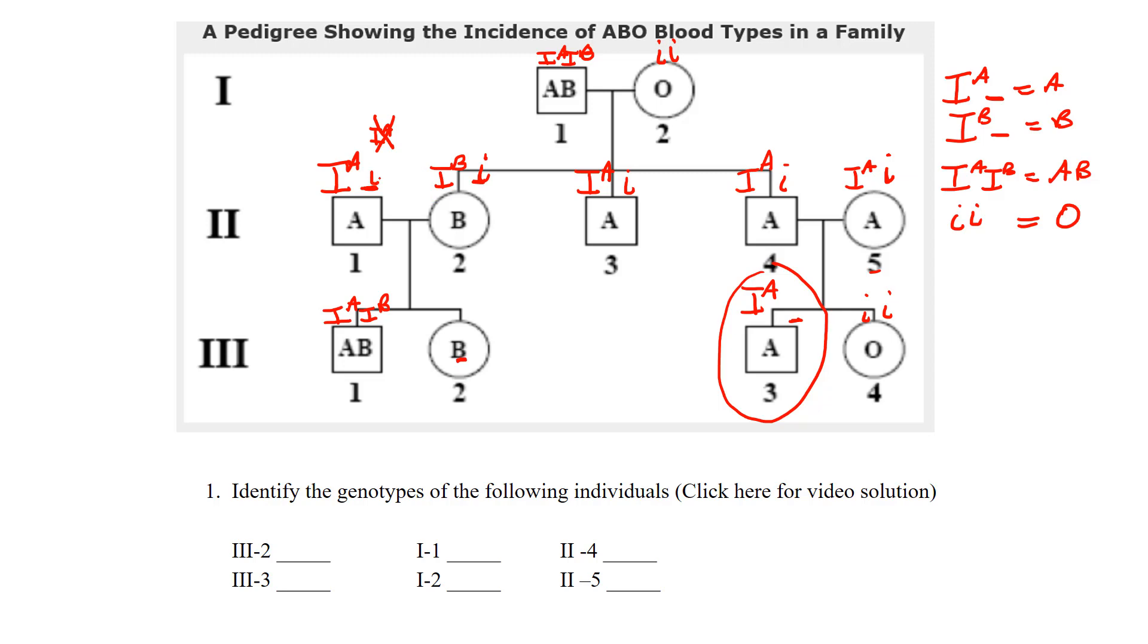So we know that that can't be homozygous for I^A, has to be a little i. We know it can't be a B because they do have A blood. So can you see how that works? If you don't, again, give me an email, we can go over it again.